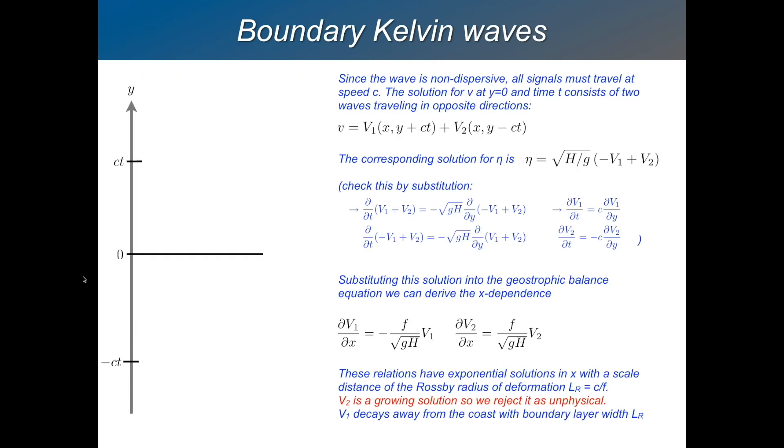First, let's think about what the solution for V might look like. Well, we've got a non-dispersive wave. We know that for sure. It only has one speed that it can go at. So let's think about what the solution for V is here at time t at the origin here. It must be equal to something which came from the north, V1, plus something which came from the south, V2. And that's all it can be.